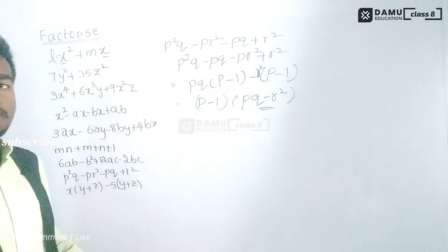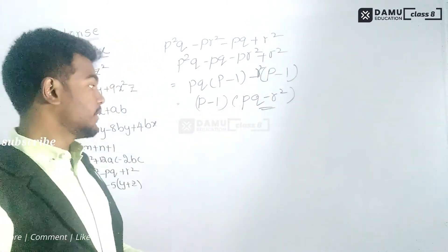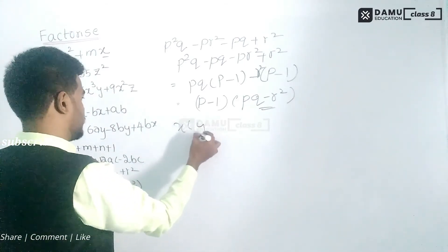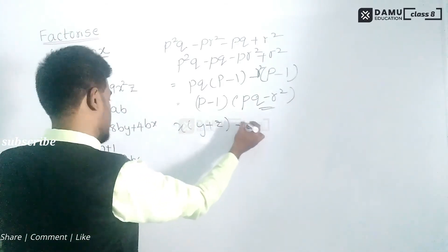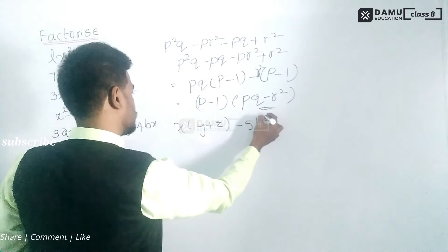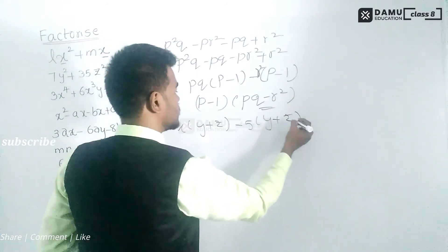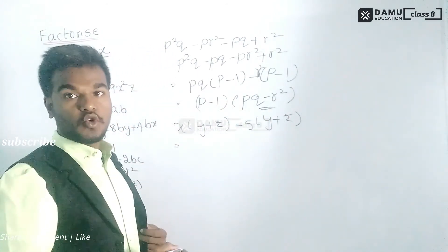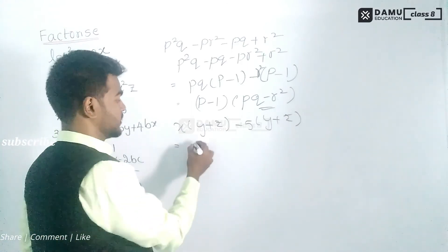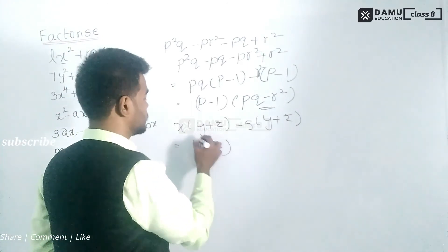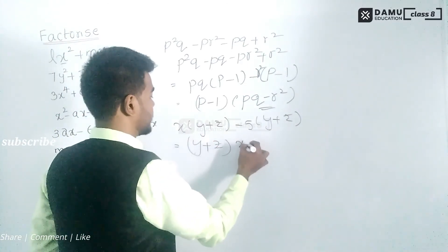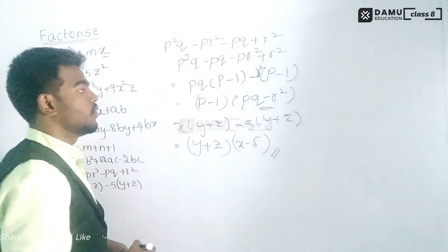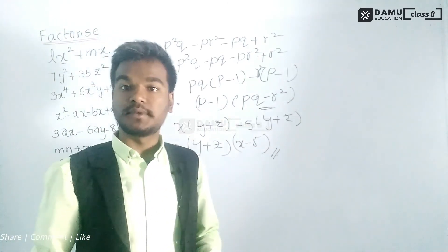The last question is x(y + z) - 5(y + z). This is very simple — (y + z) is common in both terms. Taking (y + z) outside gives (y + z)(x - 5). That is the answer. Thanks for watching, please subscribe.